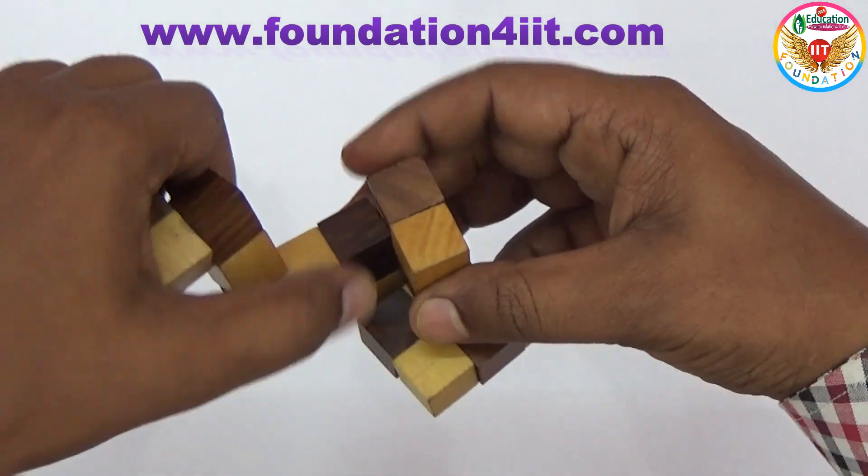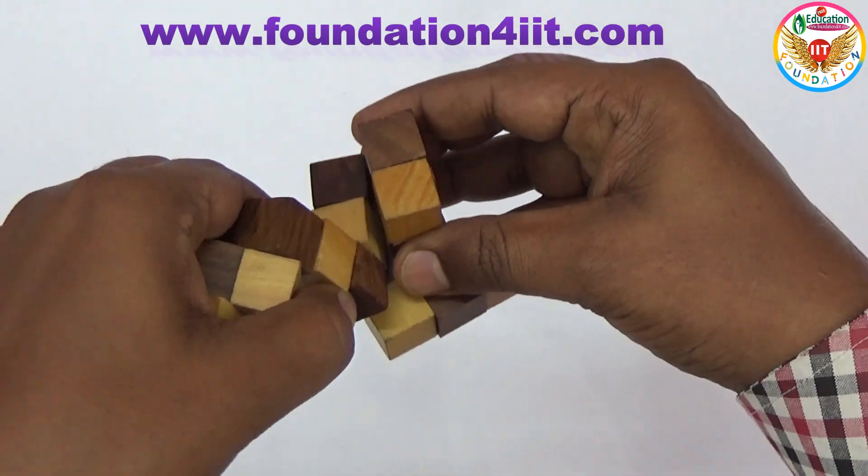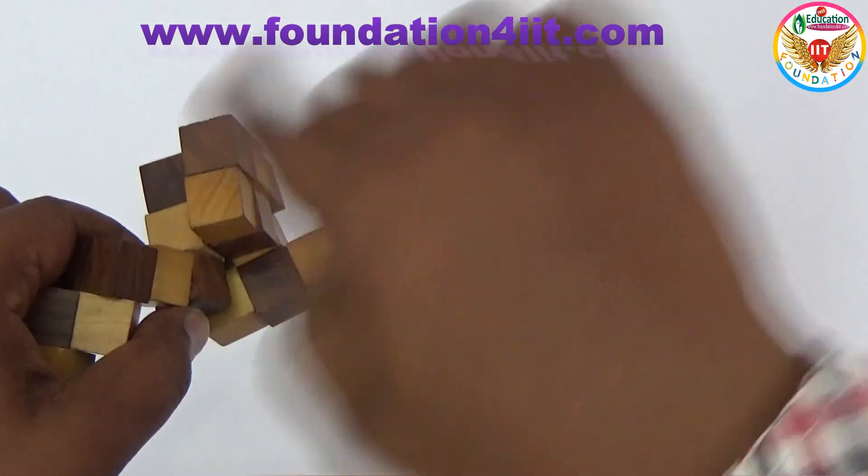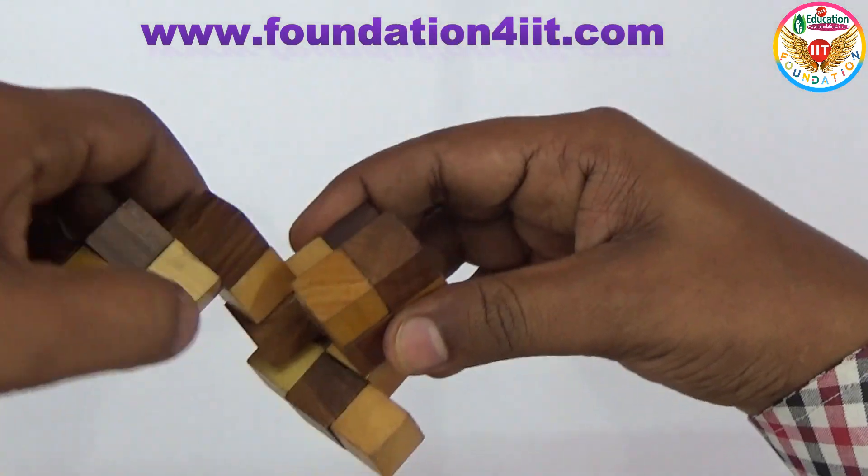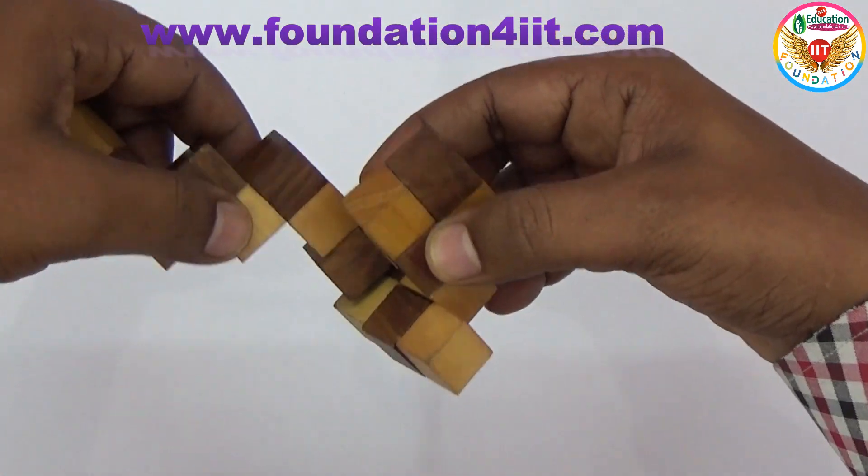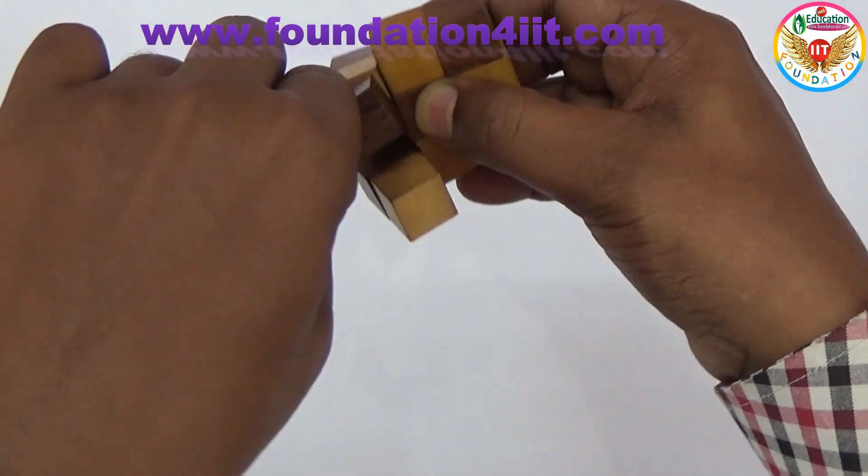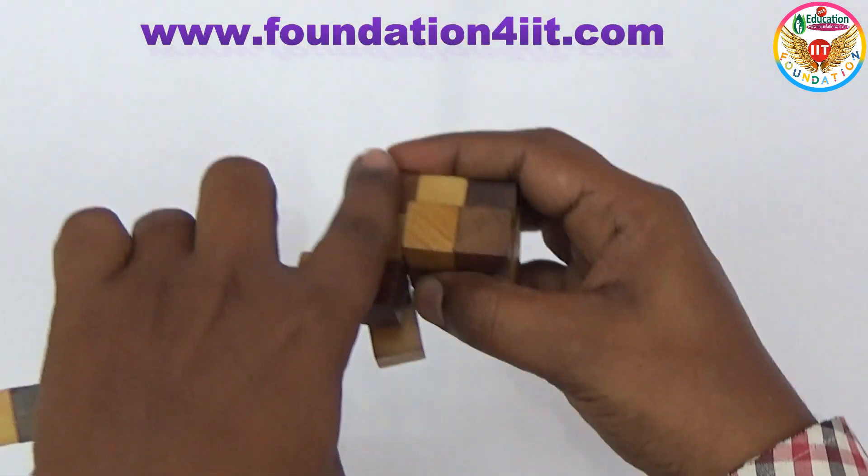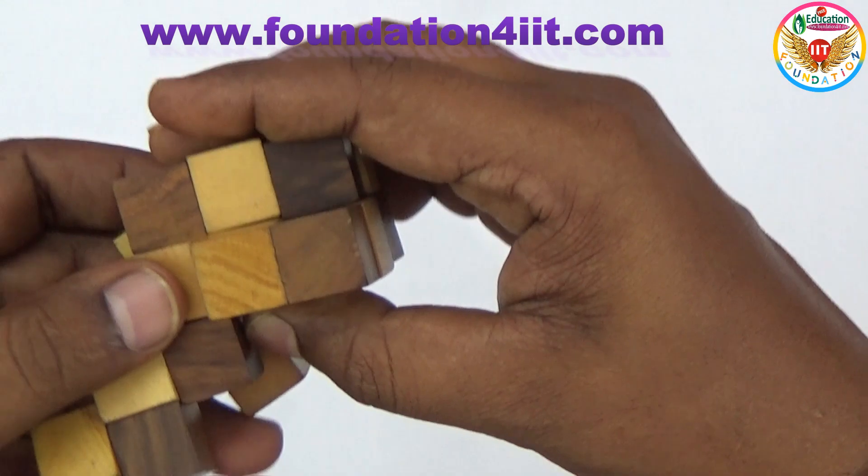After rotating, these three just take to this. Just by rotating, it will come automatically. Again, next three are there, so next three we can take on this. Like that you can take them one by one.